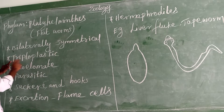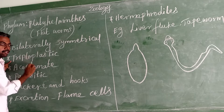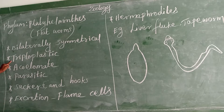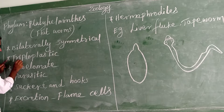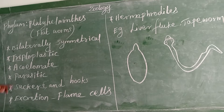They are Triploblastic organisms. They have three layers: ectoderm, endoderm, and mesoderm. Because there are three layers, they are called Triploblastic.